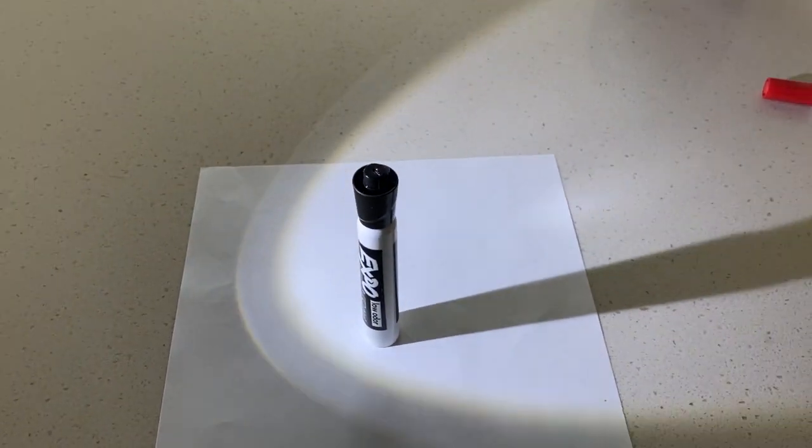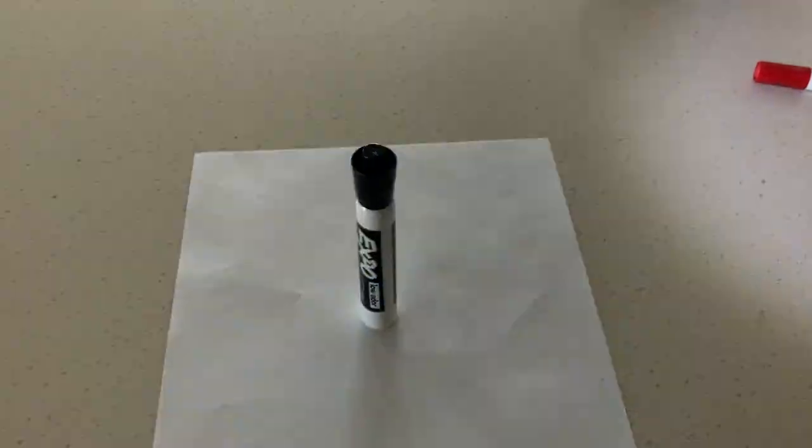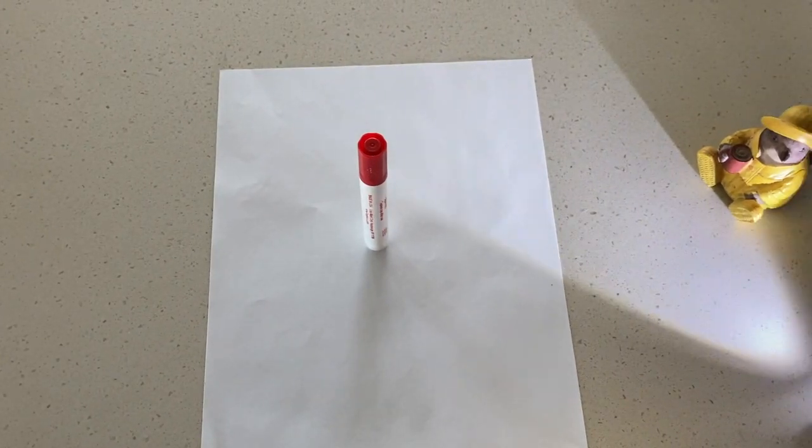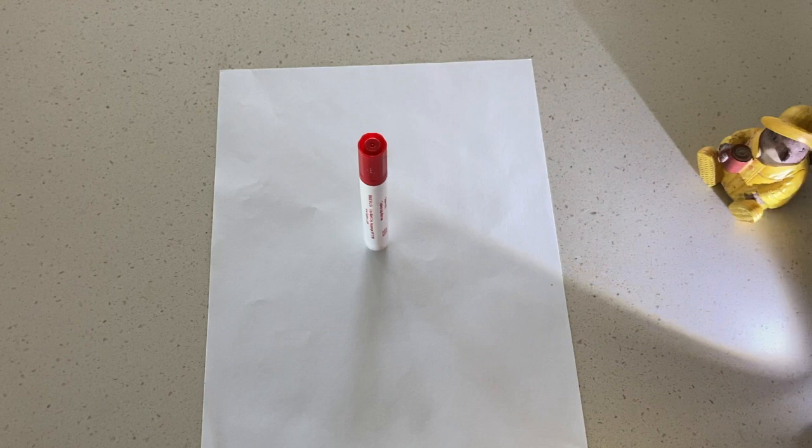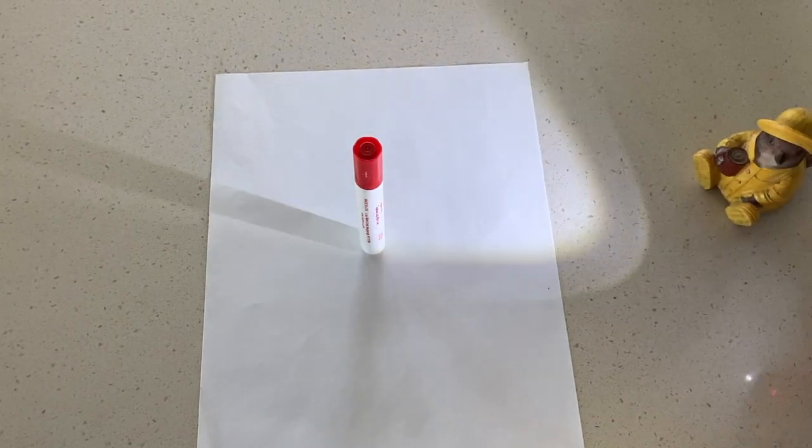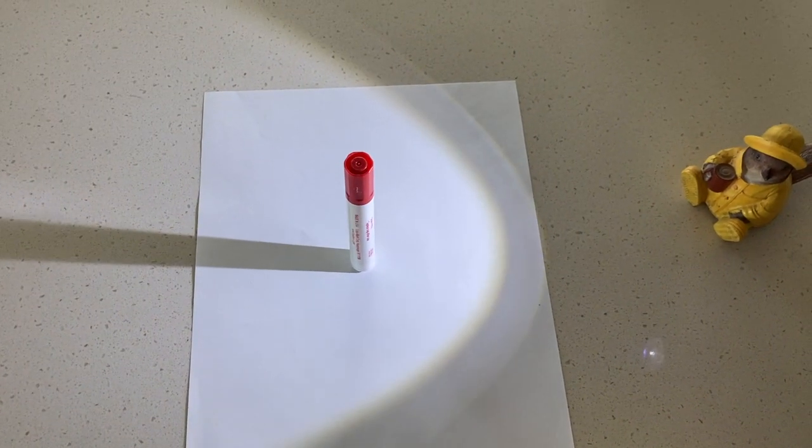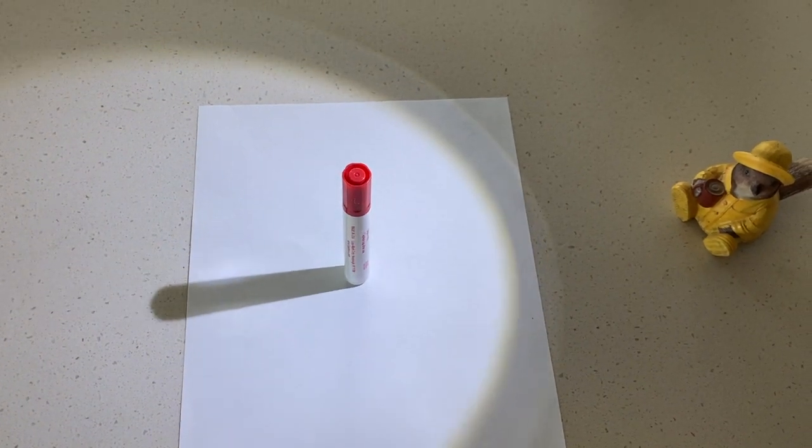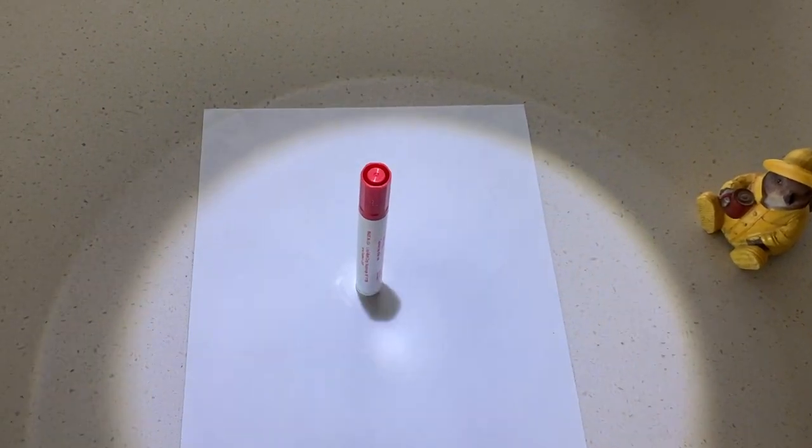This is our model of how our shadow changes throughout the day. Try the model with multiple objects. Watch as the shadow changes as you move your flashlight. This is the same as the way your shadow changes throughout the day.